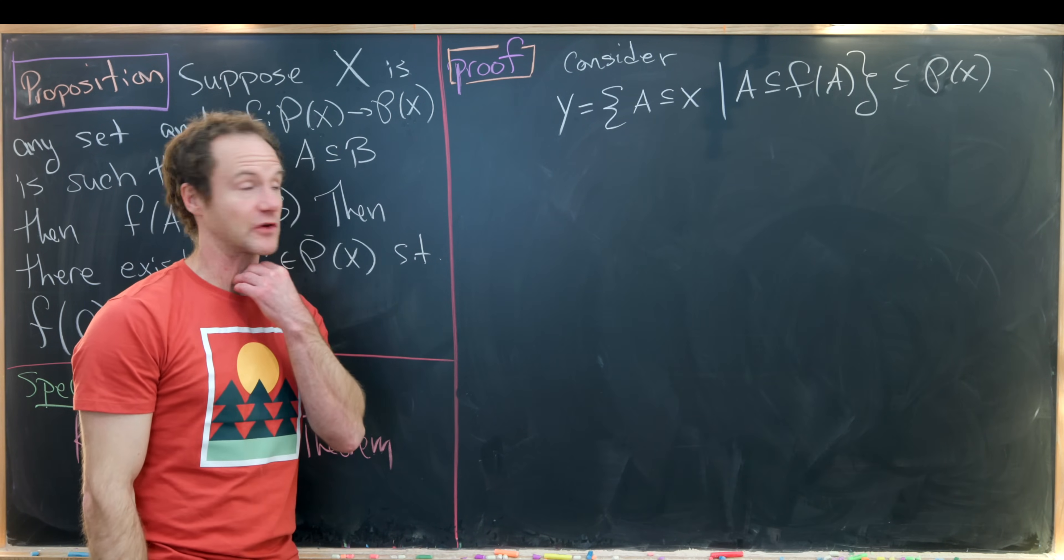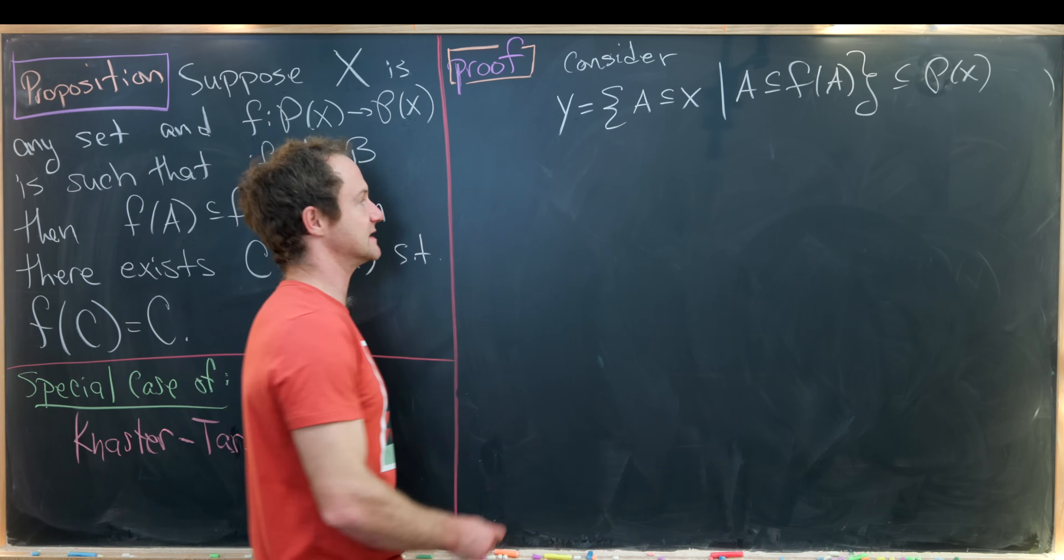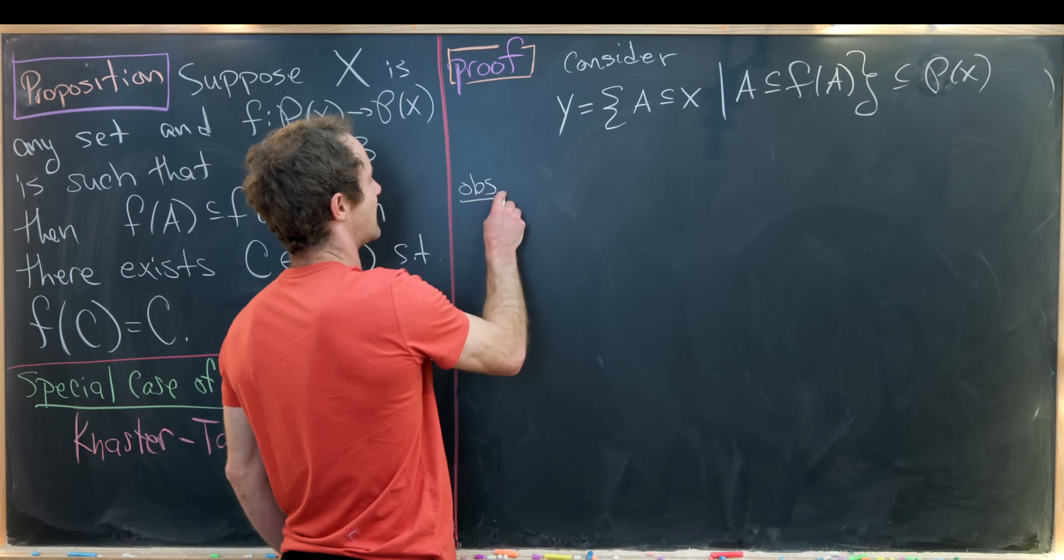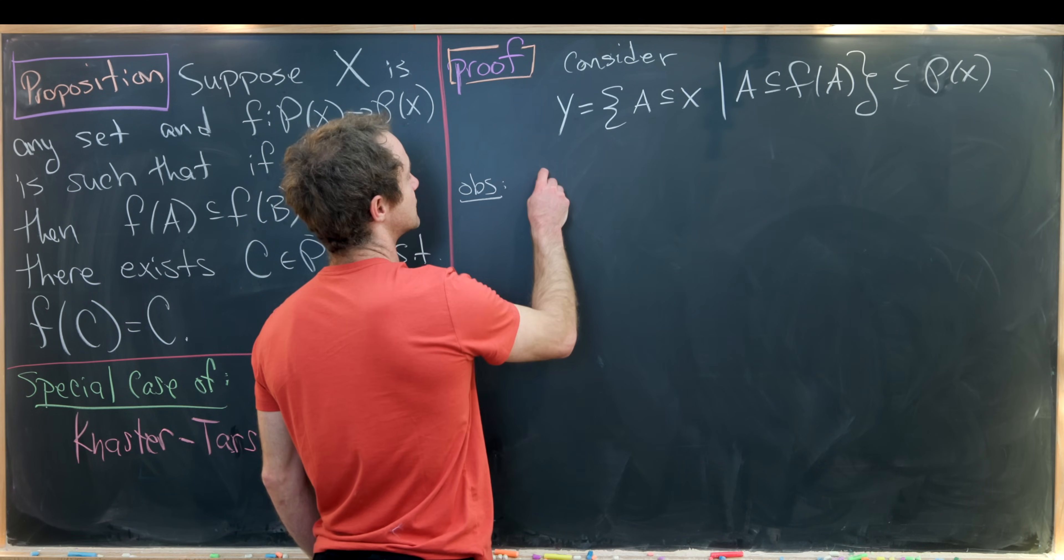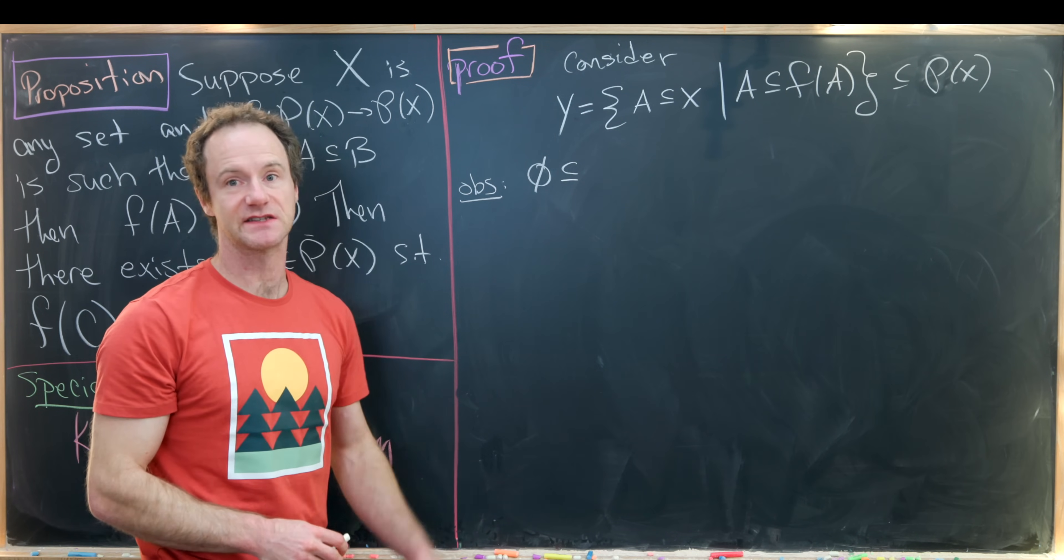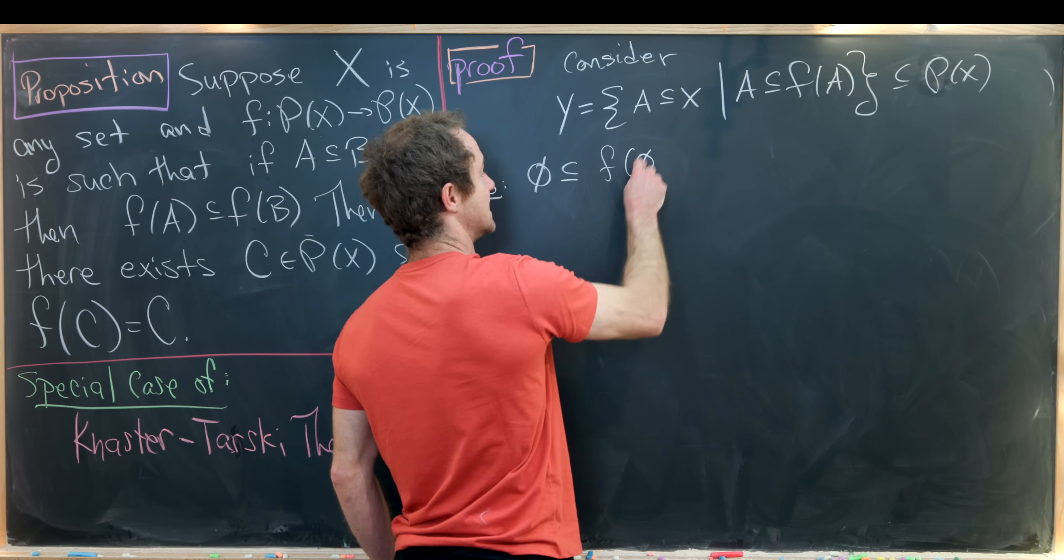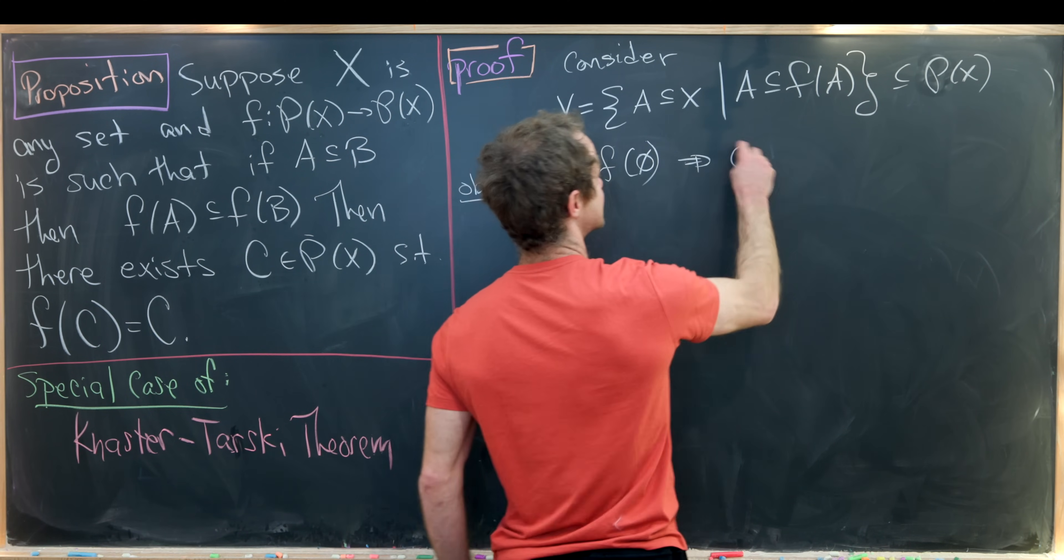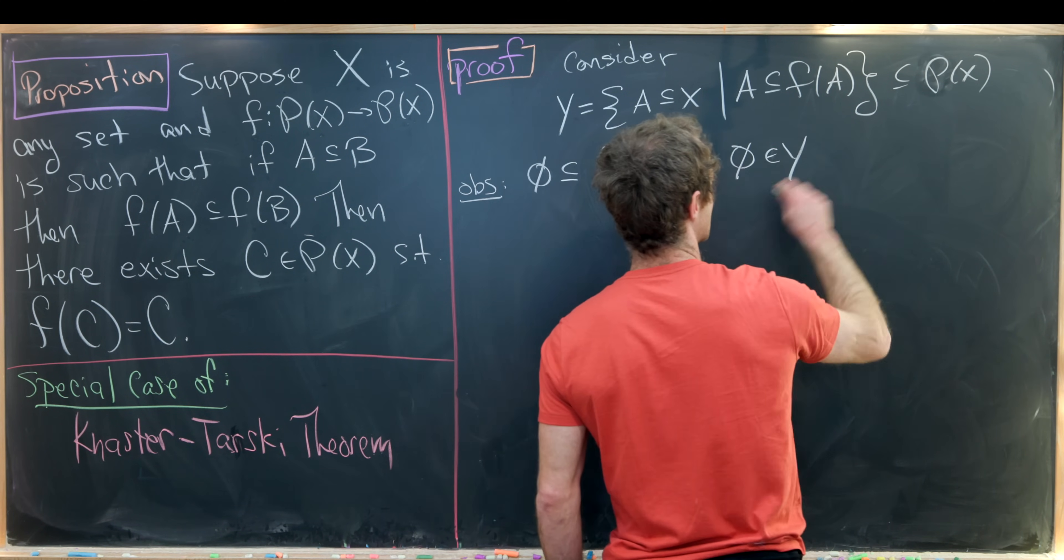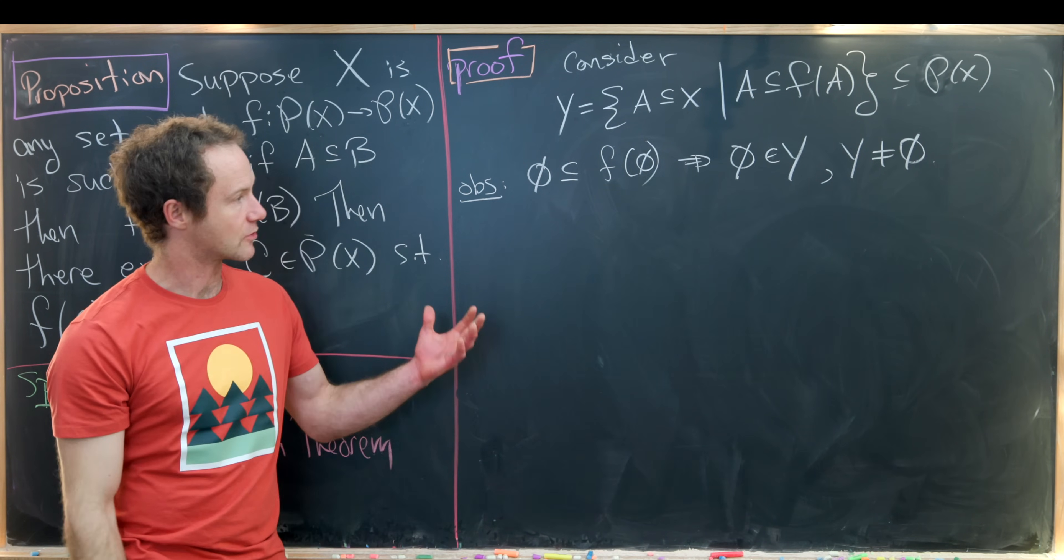Before we can get off the ground we'd like to argue that y is non-empty and it is. So let's do that with the following observation. So notice that the empty set is most definitely a subset of any subset of x. So indeed it's a subset of its image. So that tells us that the empty set is an element of y. In other words y is non-empty. Okay great.